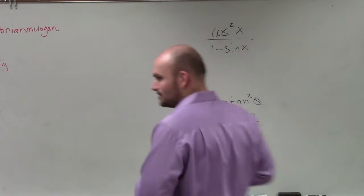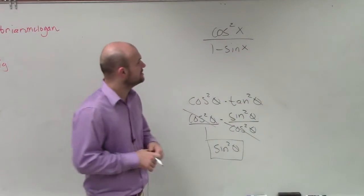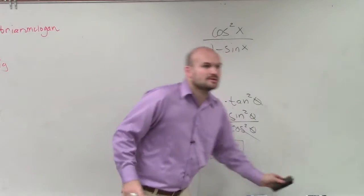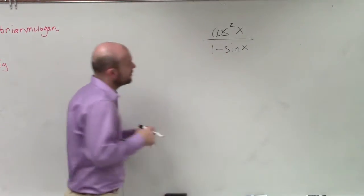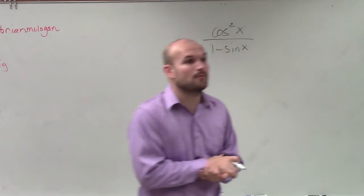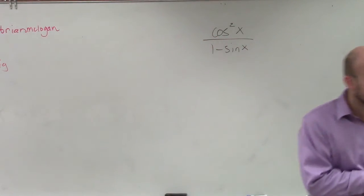We just got one more example, and we're almost done. So in this case, I have cosine squared of x divided by 1 minus sine of x.